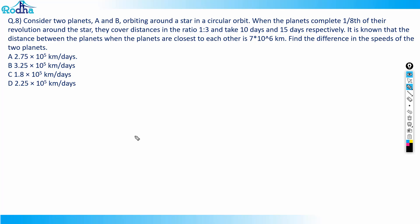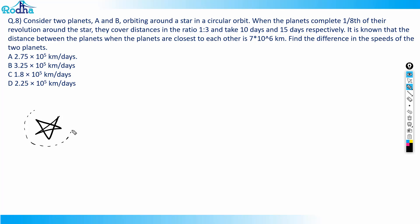Two planets A and B are orbiting around a star. Let's draw the star here with the first planet orbiting around it and the second planet also orbiting around the star in a circular orbit. It is known that the distance between the planets when they are closest to each other — these two planets will be closest when all three bodies are in a straight line.